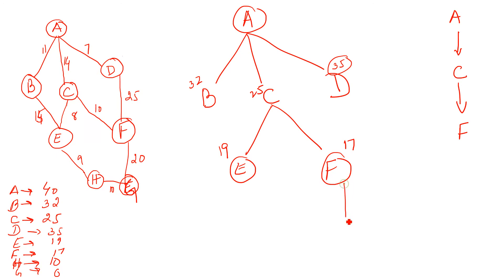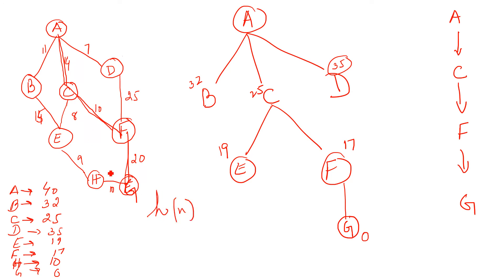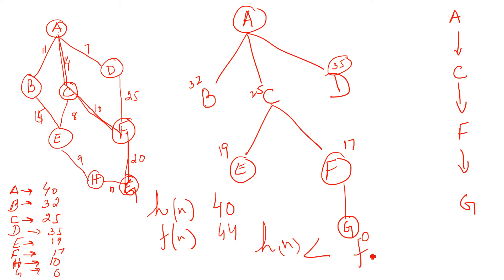From F there is only one branch going to our goal node G. The heuristic cost of G is 0 because from G to G is 0. So our route is A to C, C to F, and F to G. The heuristic cost from A to G is 40. The actual cost F(N) is: A to C is 14, C to F is 10 (total 24), and F to G is 20, giving a total of 44. In this case, heuristic cost (40) is less than actual cost (44), which is acceptable — though this is not the optimal solution, it is admissible.